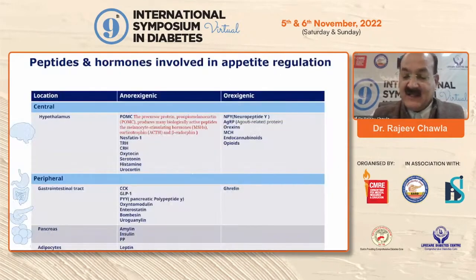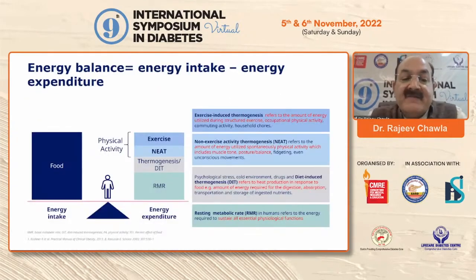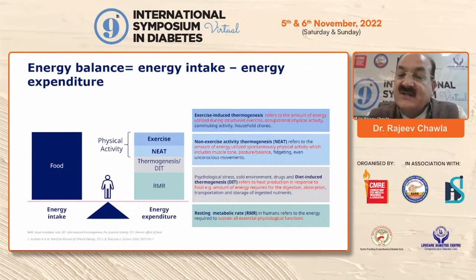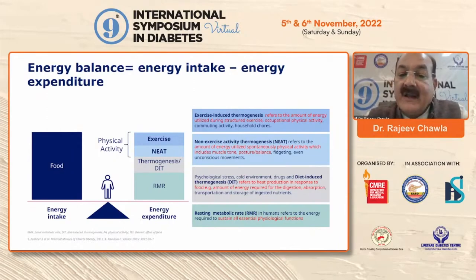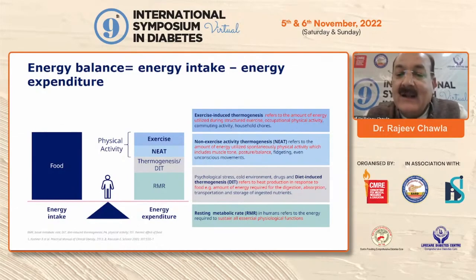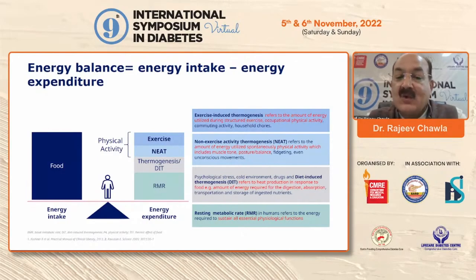When we talk about energy expenditure, it is important to understand that physical activity in any form is going to lead to some amount of energy expenditure — whether it is a structured exercise, which refers to the amount of energy utilized during structured exercise, like occupational physical activity, commuting activity, or even household work. Then there is NEAT, which is non-exercise activity thermogenesis, referring to the amount of energy utilized spontaneously from muscle tone, posture, or balance. Even standing amounts to a significant amount of energy expenditure through NEAT.